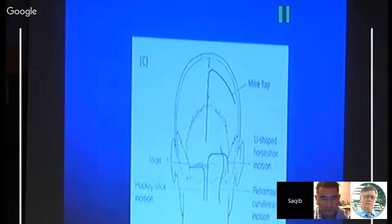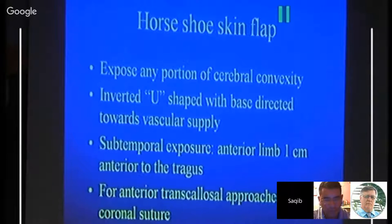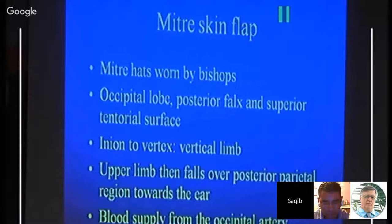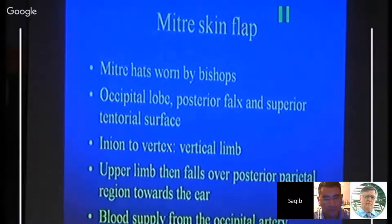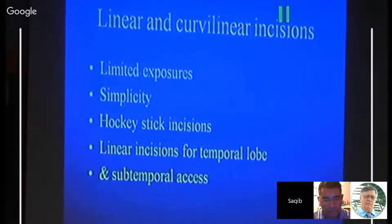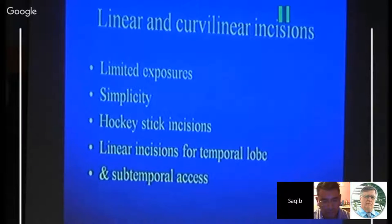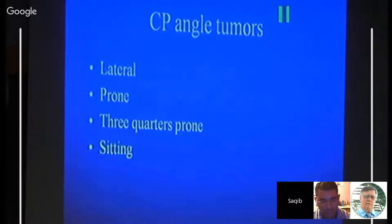For posterior flaps, options include the hockey stick, retrosigmoid, horseshoe, or omega shapes. The horseshoe exposes any portion of the cerebral convexity as an inverted U-shape, directed toward the vascular supply. Subtemporal exposure has the anterior limb one centimeter anterior to the tragus. For anterior or transparietal approaches, the incision is over the coronal suture. The omega flap, stemming from the work of Bishops, provides occipital lobe, posterior fossa, or superior tentorial surface exposure, extending to the vertex. It is supplied by the occipital artery. Linear or heavy linear incisions are simpler options useful for suboccipital and pineal approaches. The hockey stick incision is used for the temporal lobe or subtemporal access. Cerebellopontine angle tumors are usually approached in lateral, prone, or three-quarter prone positions.